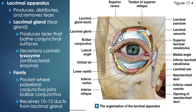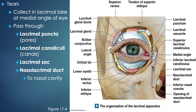The fornix is the spot where the palpebral conjunctiva joins the bulbar conjunctiva, and it receives about 10 to 12 ducts from the lacrimal gland. More specifically, tears are produced at the supralateral aspect of the eye, drip through the lacrimal gland ducts to the surface of the eye, then collect at the medial angle in the lacrimal lake — a pooling of tears. They then pass through the lacrimal puncta, a tiny pore in the center of the medial angle, through the lacrimal canaliculi, arrive at the lacrimal sac, and drip down through the nasolacrimal duct into the nasal cavity — hence the runny nose when we cry.